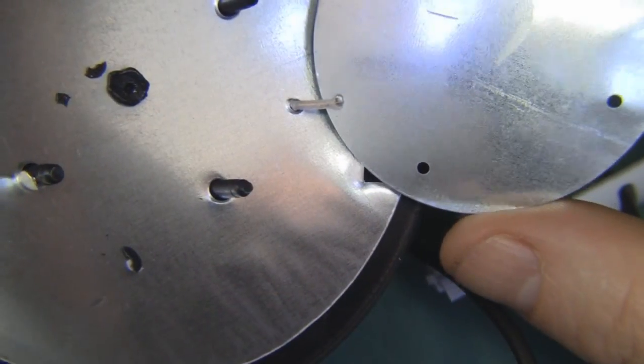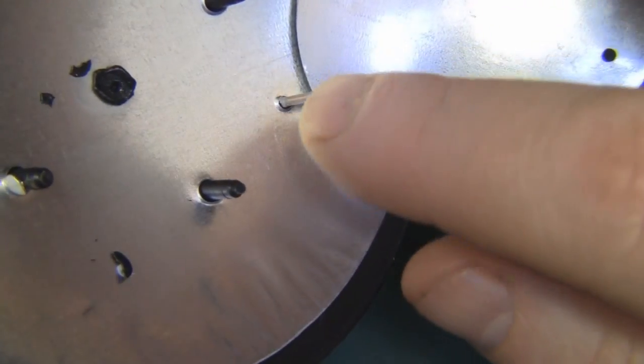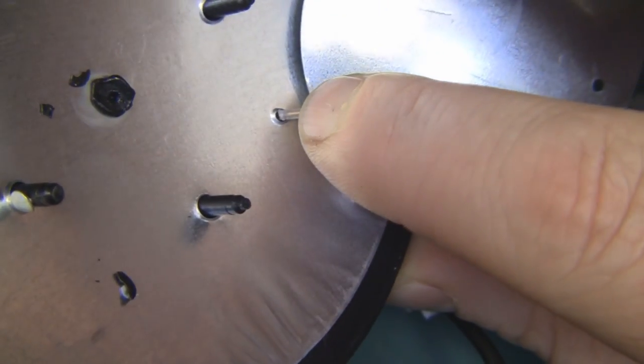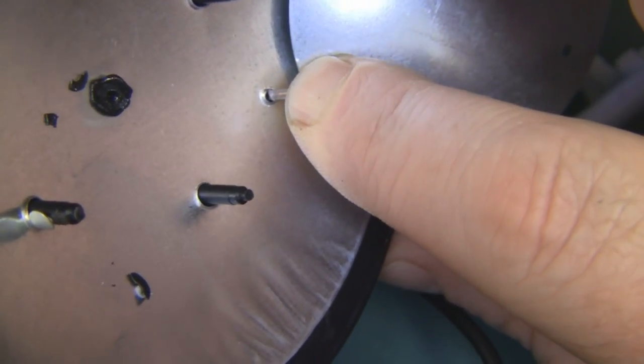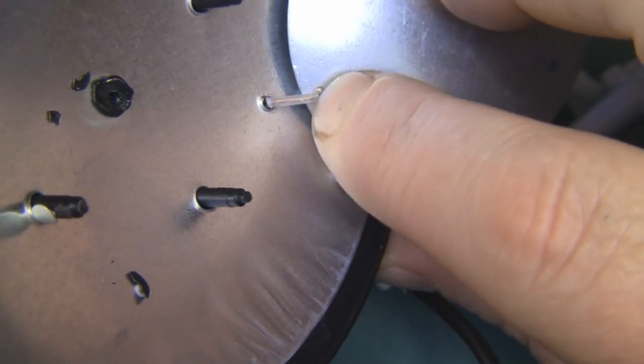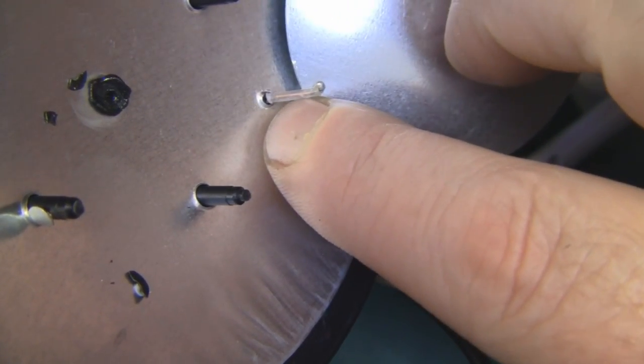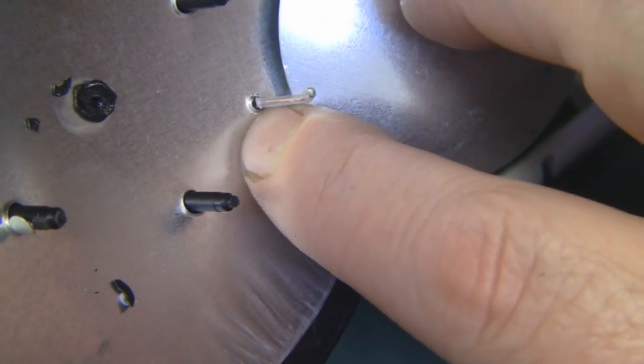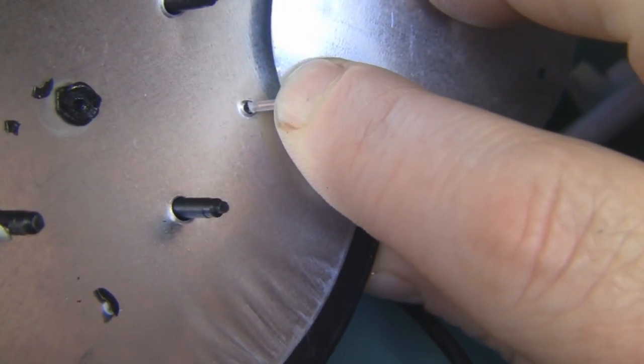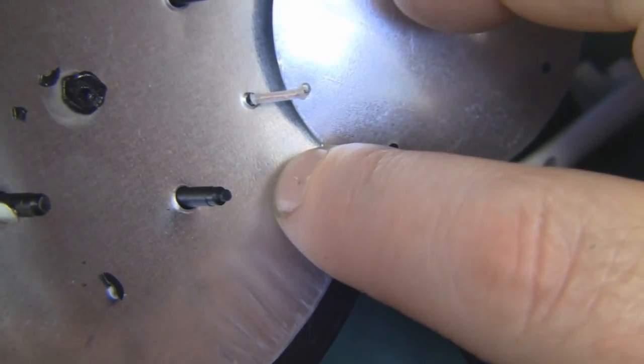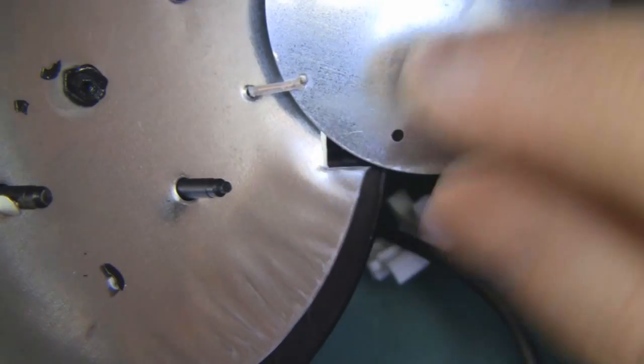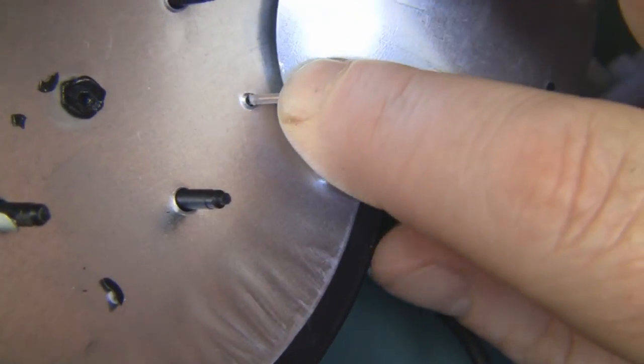I've got the main driven element off here and I've put the macro lens on just to show you why this antenna may have performed so poorly. What's happened here is where the coax actually comes up through the reflector to solder onto the main driven element, the actual metal has actually cut into it, so it's actually grounded to the reflector. The signal wire is grounded to the reflector and the main driven element.